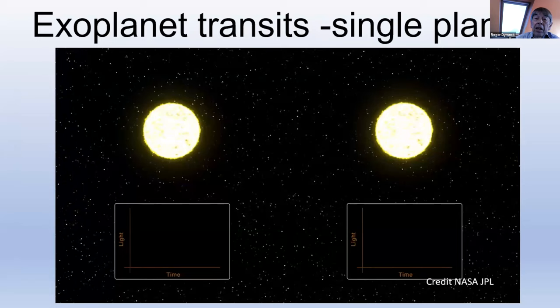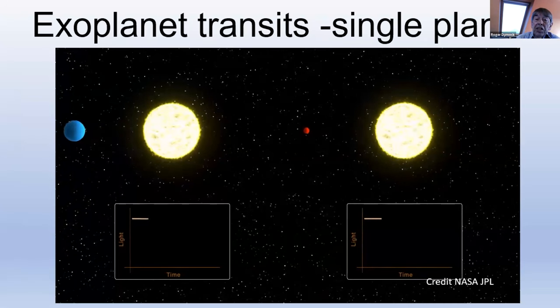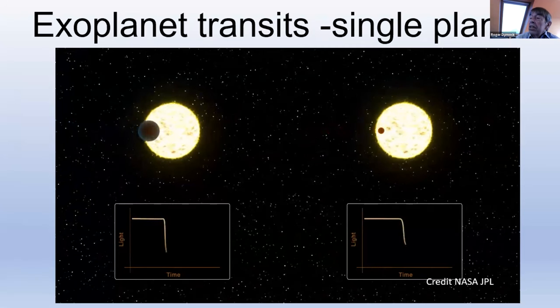When a planet passes directly between a star and its observer, it dims the light by a measurable amount, if you've got a good telescope and a good camera. The larger planets, as you might expect, block more light. And this animation shows the difference in sizes and shows the changes in the light curve. As you can see, the larger planet blocks out more light for a longer time.